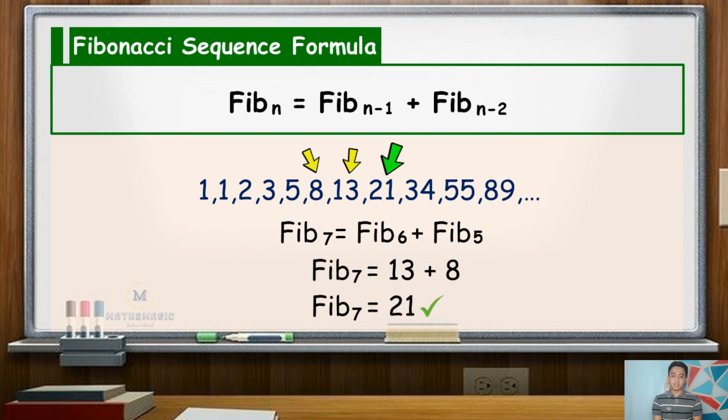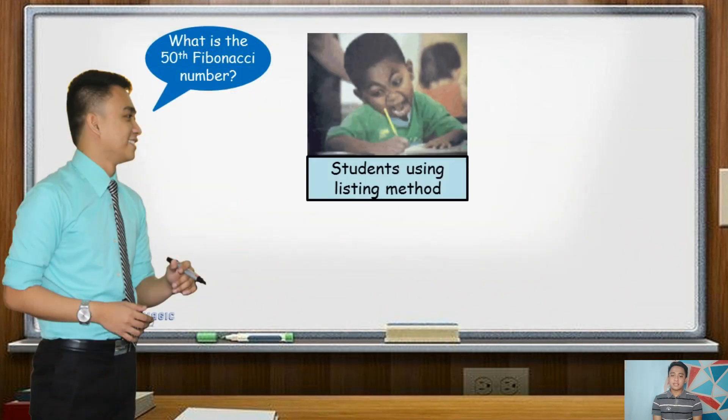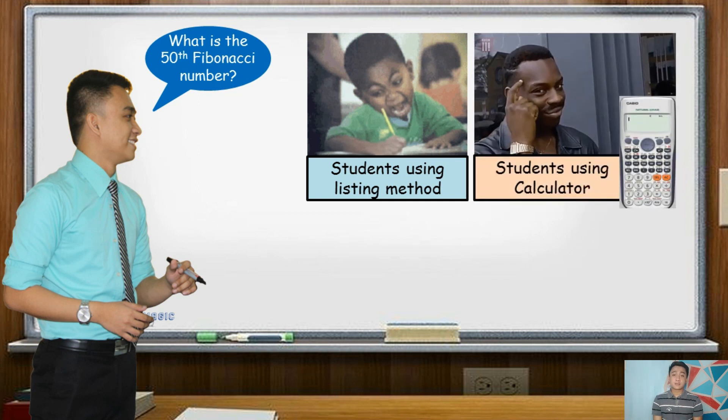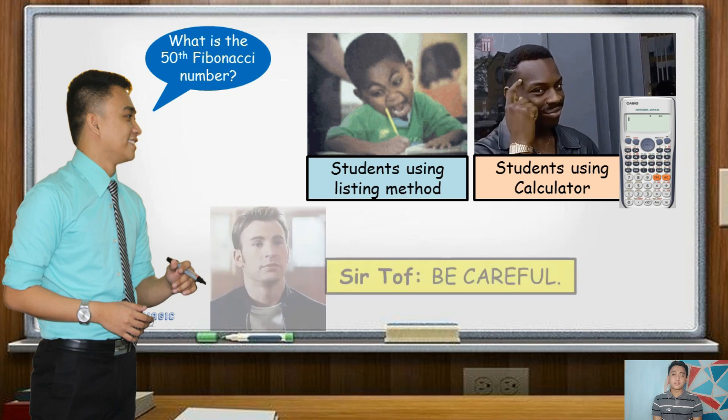Moreover, when finding the nth term, students typically calculate manually the preceding terms until they arrive at the indicated term. But this process is laborious, especially if you were asked to identify a term with high nth value. You usually have a long list of numbers and sometimes, even if you are using a calculator, you are still susceptible to errors.